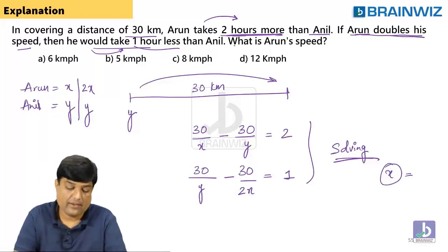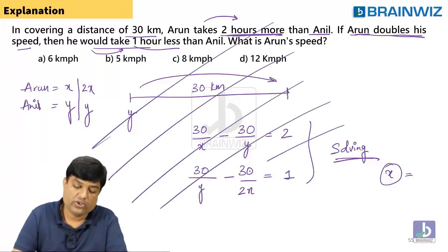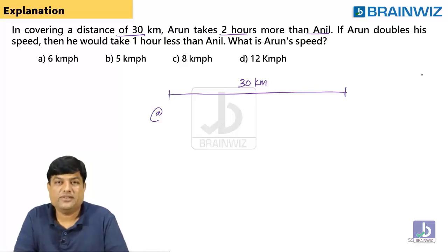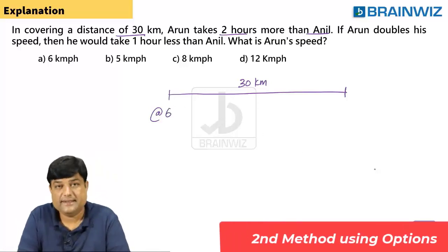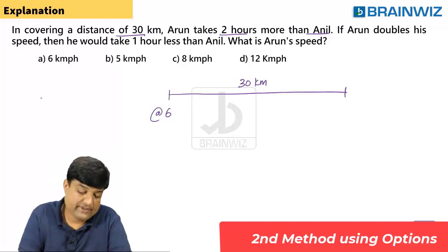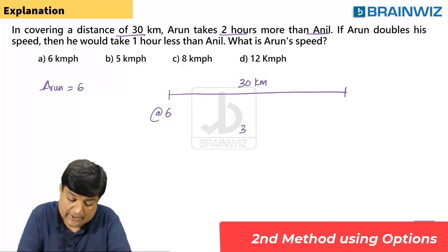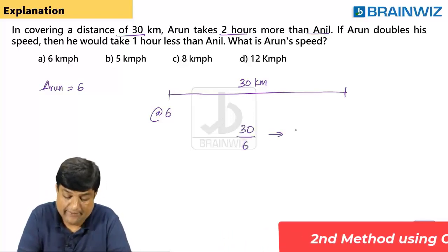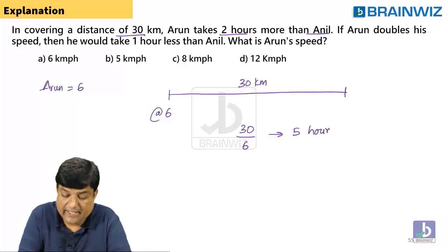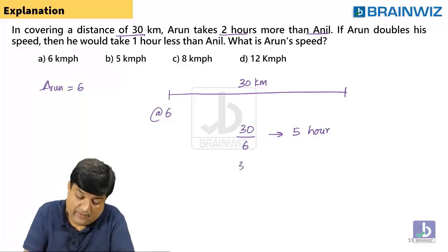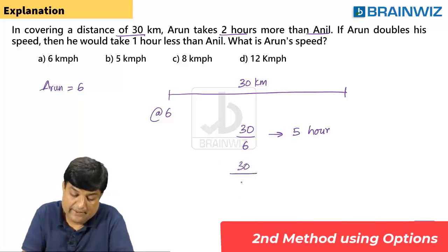This long approach takes time, so let's save time with a second method — going with the options. The speed option is 6. Let Arun's speed be 6 km/h. Then 30 divided by 6 gives 5 hours for Arun. When he doubles his speed, 30 divided by 12 gives 2.5 hours. The gap between these is 2.5 hours.